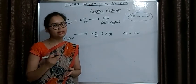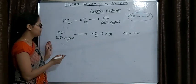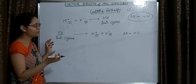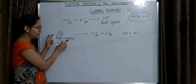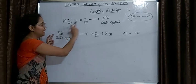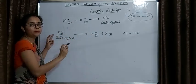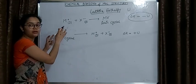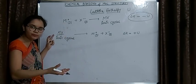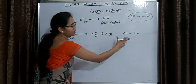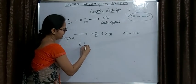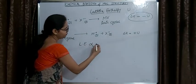Now we will see the relation between stability and lattice enthalpy. If MX is a less stable compound, then we have to provide less energy to break it, meaning the lattice enthalpy will be less. If it is a very stable compound, we have to provide extra energy, so the value of lattice enthalpy will be higher. Therefore, lattice enthalpy is directly proportional to stability.